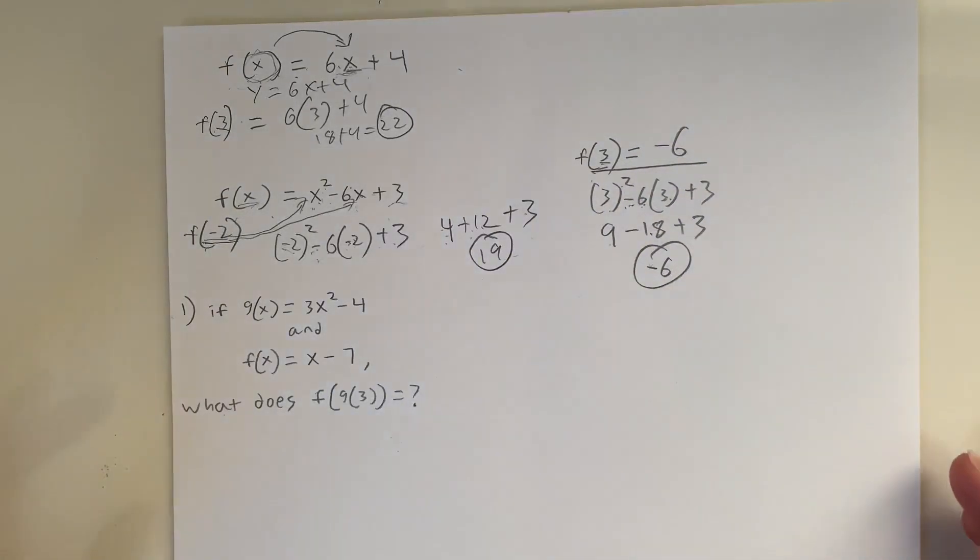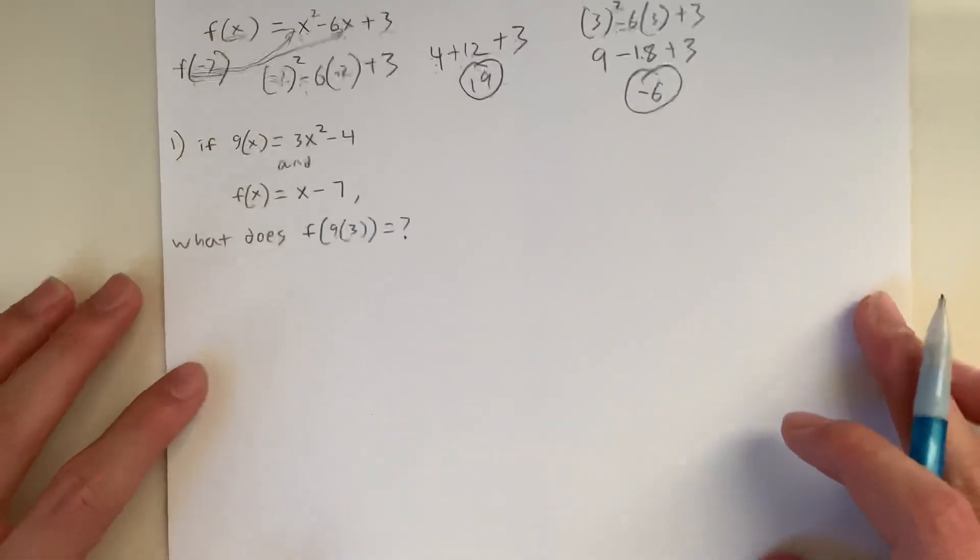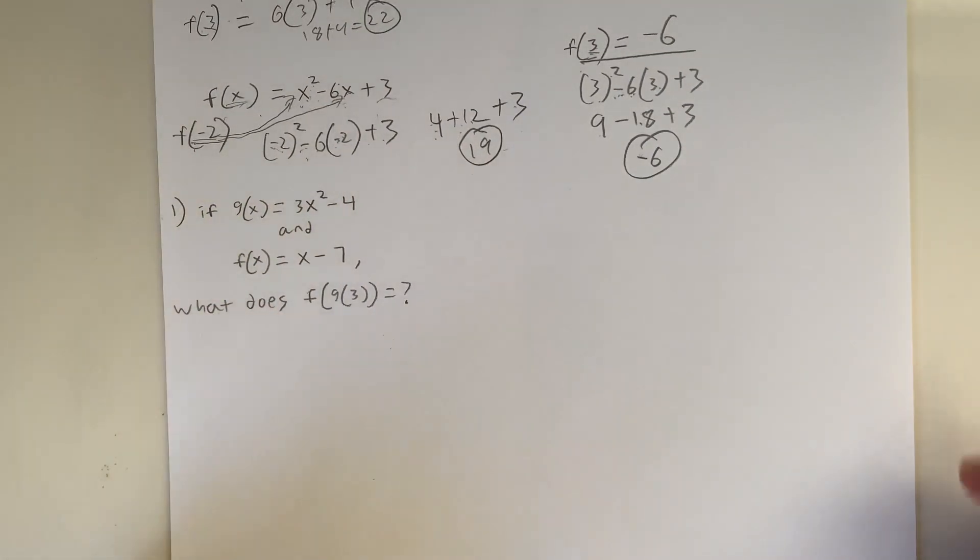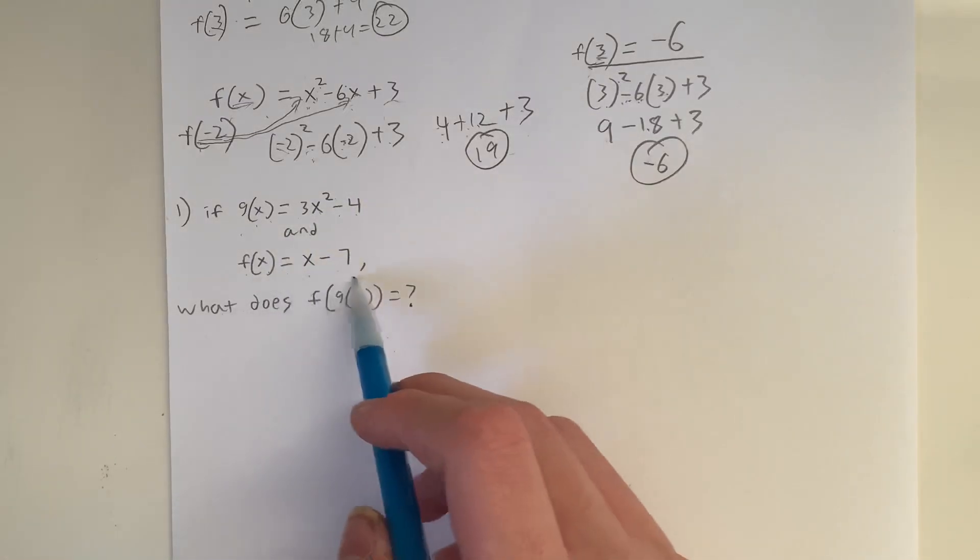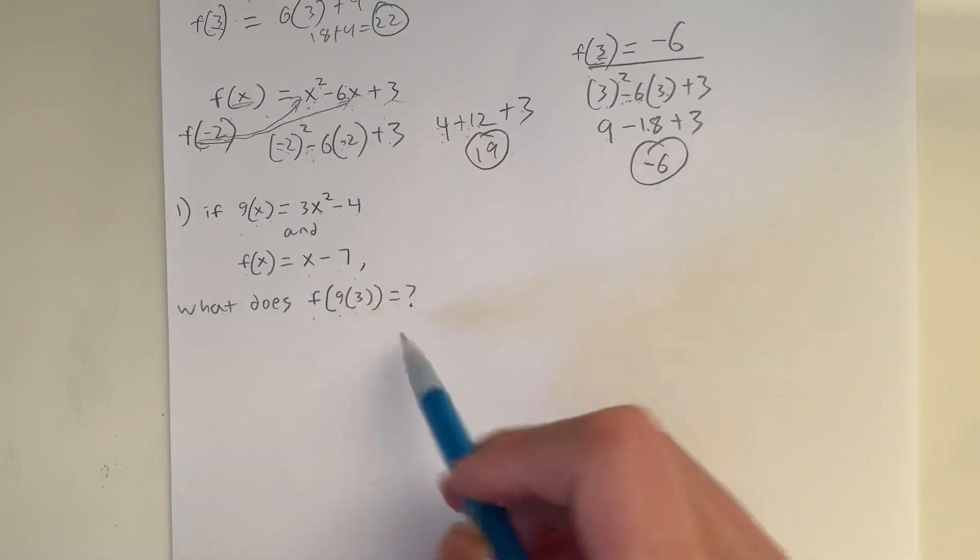So basically, if you guys understand that you just have to plug in that number in, this makes solving this question pretty easy. So if g(x) is equal to 3x squared minus 4 and f(x) is equal to x minus 7, what does f of g of 3 equal to?